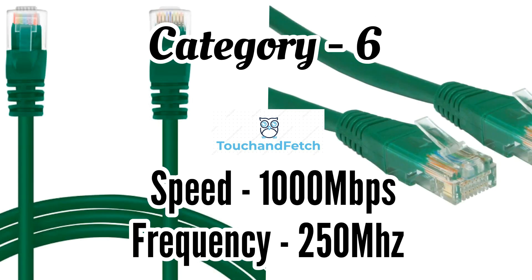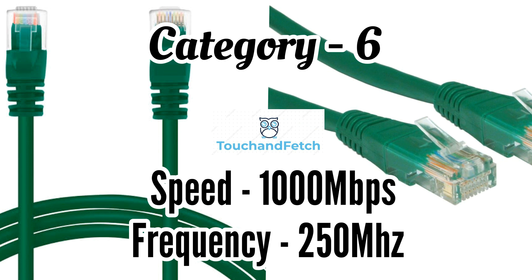The next one is Cat6. Cat6 is called Category 6 cable. Speed: 1000 Mbps, frequency: 250 MHz. This provides high performance and is used in offices to achieve high-speed networking.